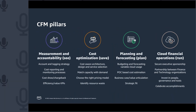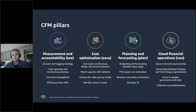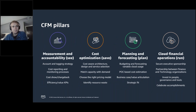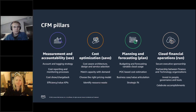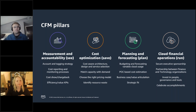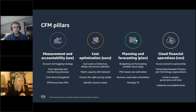The four pillars are See, Save, Plan, and Run. Under See: account tagging strategy, cost reporting, and showback. Under Save: cost-aware architecture and design, identifying waste, and choosing the right pricing models. Under Plan: budgeting and cost estimation built into cost-aware architectures. Under Run: it's not just the technology of how you manage to run, but also the people side — securing sponsorship, investing in governance, people, tools, and celebrating accomplishments.